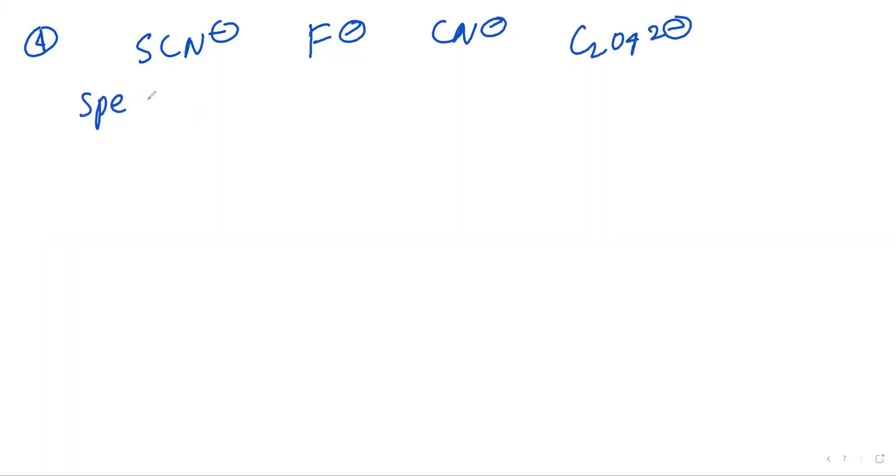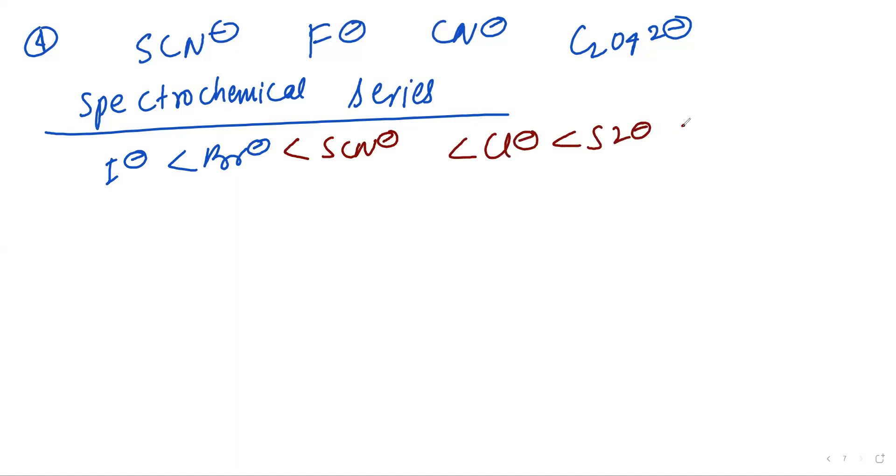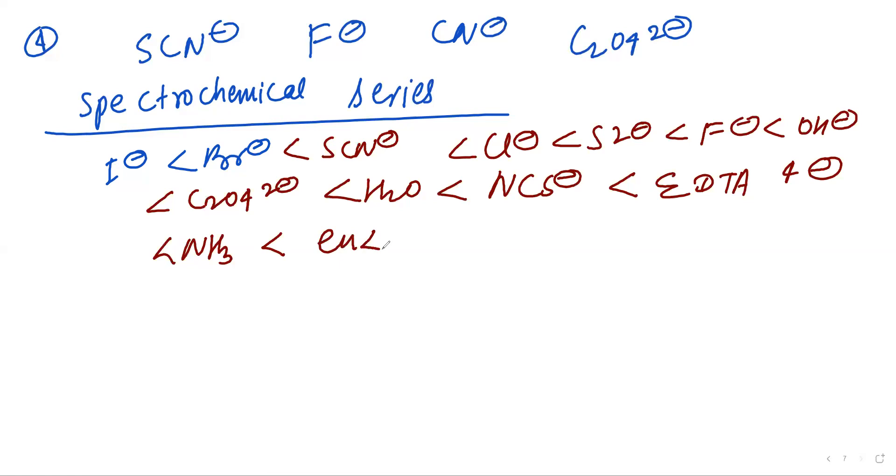So it is given like I minus, Br minus, SCN minus, Cl minus, F minus, C2O4 2 minus, H2O, NCS minus, NH3, then ethylenediamine, then CN minus, then CO. They are in increasing order. C2O4 2 minus comes after F minus, so first come SCN minus, then F minus, then C2O4 2 minus, next is CN minus. This will be the answer.